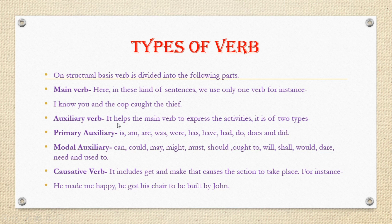Next is the auxiliary verb, which helps the main verb express activities. There are two types. Primary auxiliaries include: is, am, are, was, were, had, have, has, do, does, and did. Modal auxiliaries include: can, could, may, might, must, should, ought to, will, shall, would, dare, need, and used to.